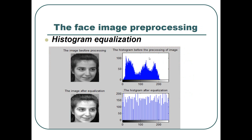I will talk about four methods of pre-processing. The first one is histogram equalization. From the figure, we know that the gray value of the original image is more concentrated, and therefore the contrast ratio is not good. After histogram equalization, the gray value is redistributed and the range of the histogram becomes larger, which means the dense area will be stretched and the sparse area is compressed. So the contrast ratio is improved and the image becomes clearer.